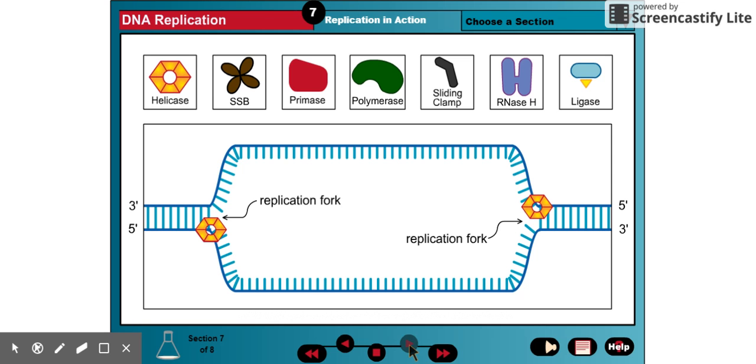Remember that the proteins involved in replication are clustered together and anchored in the cell. Thus, the replication proteins do not travel down the length of the DNA. Instead, the DNA helix is fed through a stationary replication factory, like film is fed through a projector.